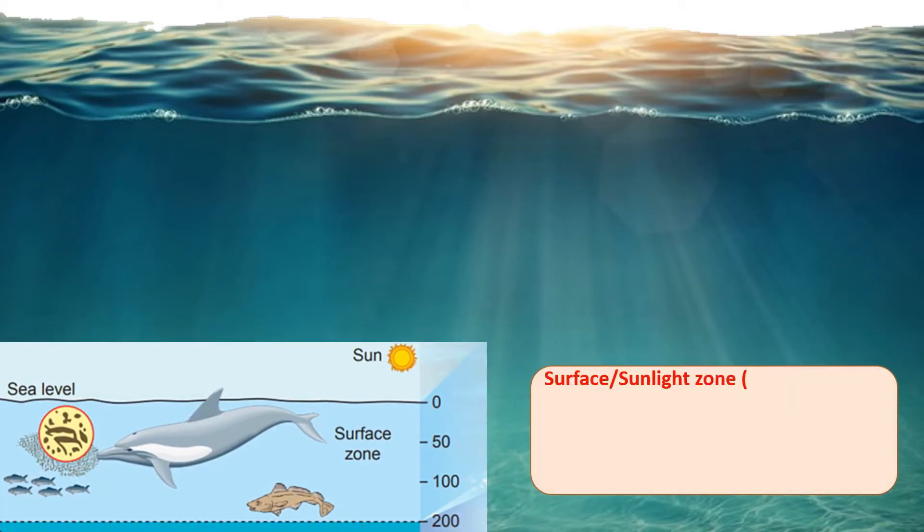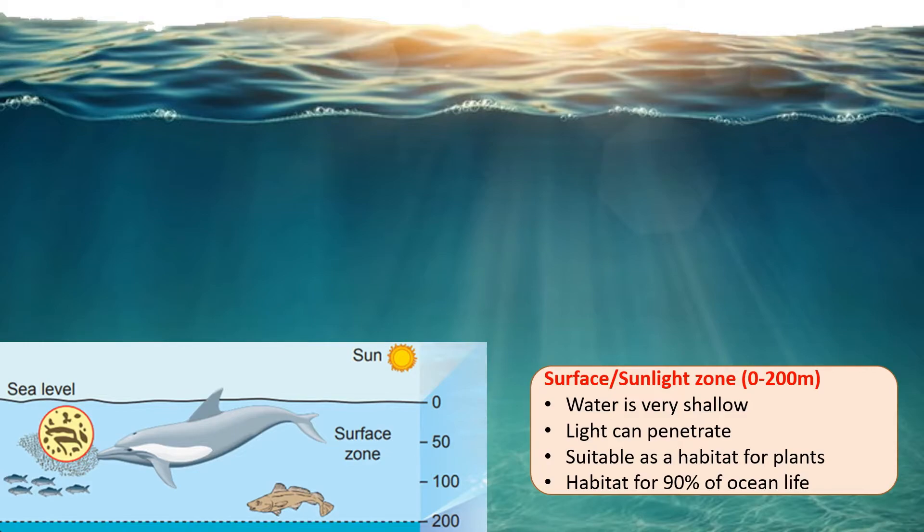The surface zone or also known as the sunlight zone is around 0 to 200 meters deep in the sea. The water there is very shallow so sunlight can actually penetrate to the sea. Hence, it is a suitable habitat for all the plants and due to the existence of plants in the sunlight zone, it became the habitat for over 90% of ocean life.